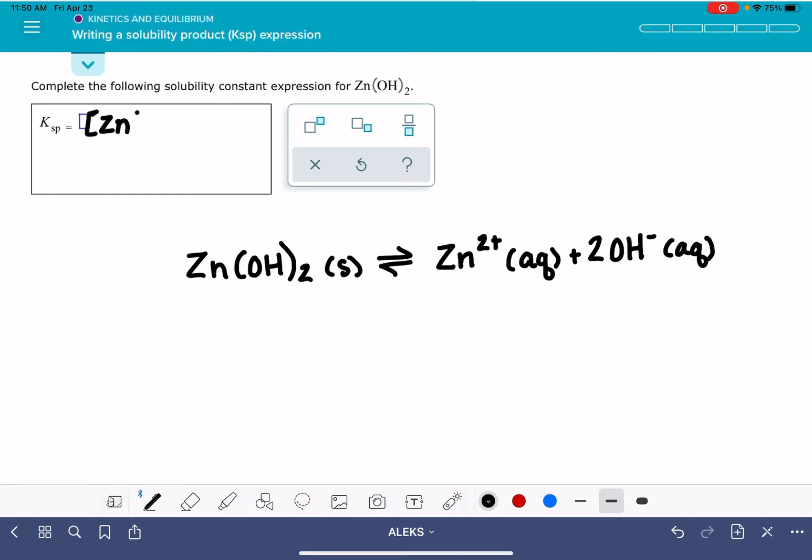ALIX is going to require you to not just enter these cations and anions in, but you also have to have the charges correct, so make sure you're getting the charges correct. Because I have a stoichiometric coefficient of 2, I'm going to be raising the OH⁻ to the power of 2. In the equilibrium expression, you do not include the AQ terms that gets left out, but again, I just want to emphasize that these problems will be marked wrong if you have the wrong charges on the ions.